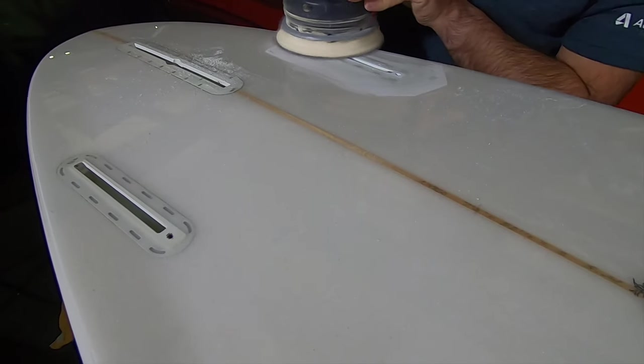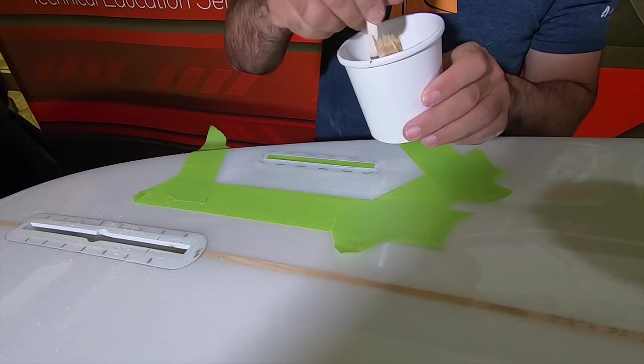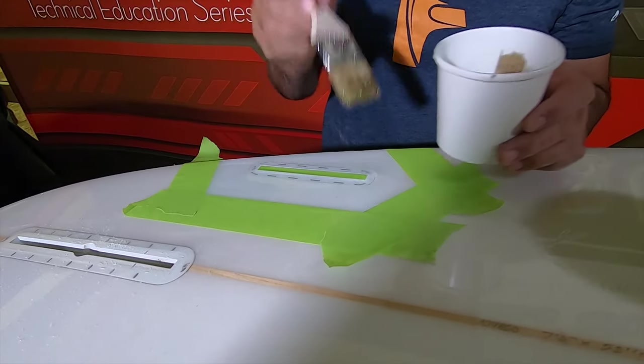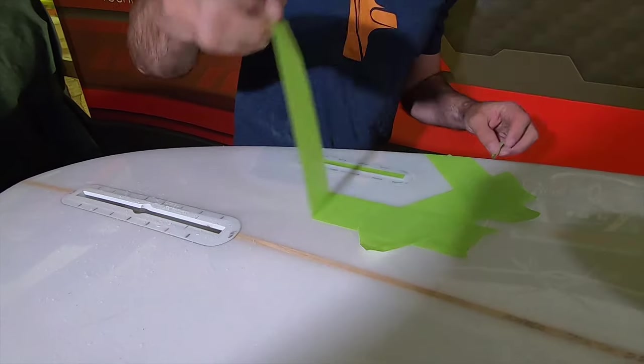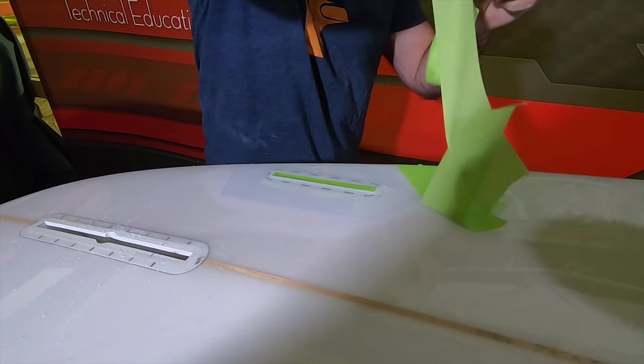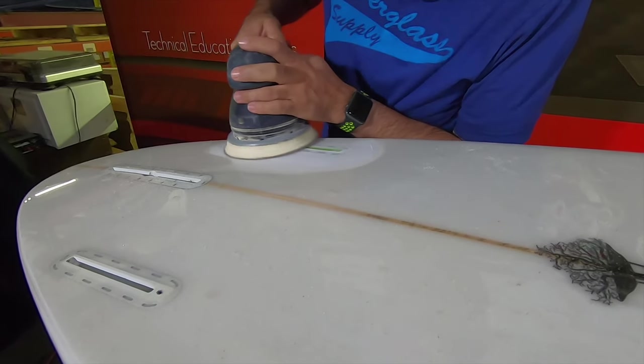This I usually do with 80 or 120 grit, and once we've got everything feathered in we're going to apply one more coat of resin over it. This is kind of our gloss layer that we'll polish up. Again pull the tape before we cure it. That way we don't peel up any resin after it's cured.